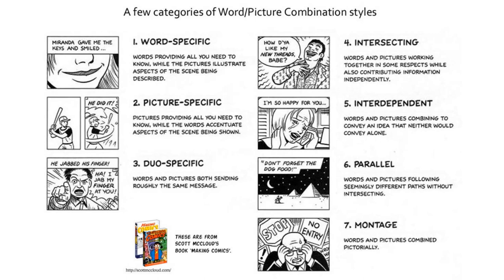Word-specific: we have a relationship between the words and the picture that are complementary. 'Miranda gave me the keys and smiled' — we see a very friendly smile. There's subtext; we could read it a few ways — there's a double entendre implication of flirting, maybe hotel keys, or it could just be a friendly co-worker. The words echo what we see and draw focus on the important parts. We don't see her hand putting keys in someone's hand — we just see the smile, suggesting where the focus is.